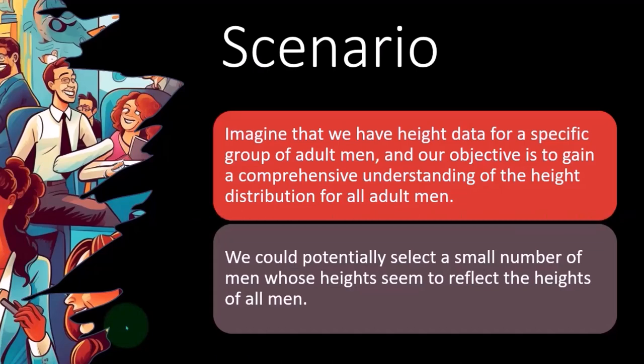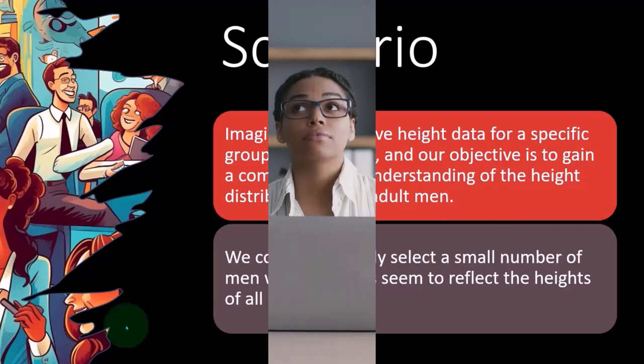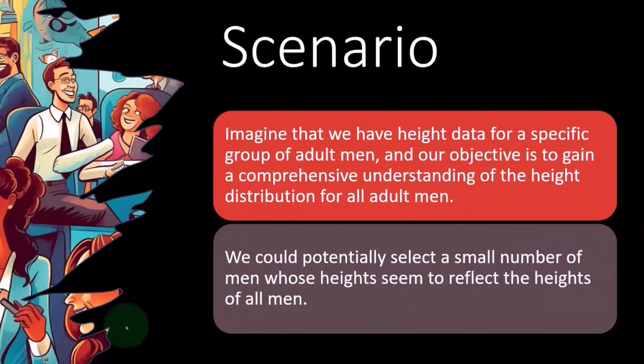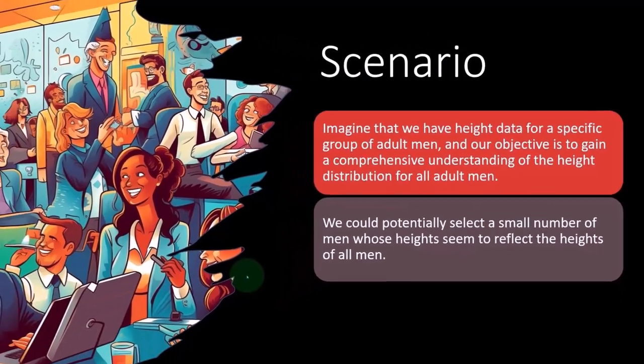Well, how am I going to take the sample? You might say: I have an idea in my mind of basically how tall people are, so why don't I just choose men in my sample that I think look about average, and then select men that have a distribution that I think mirrors the actual distribution. Then it'll be easy for me to pick my sample.